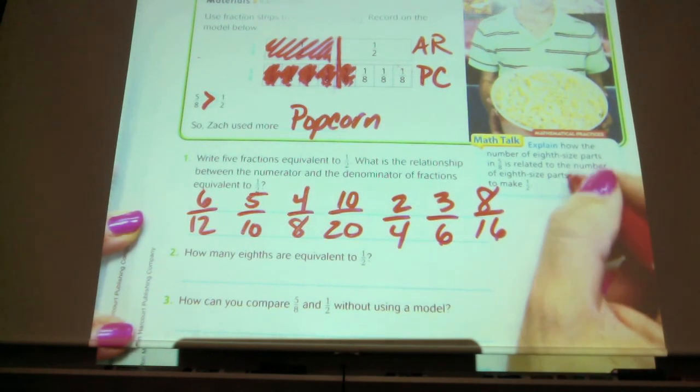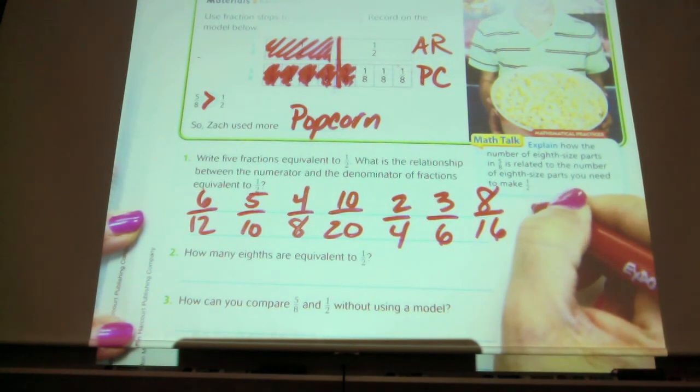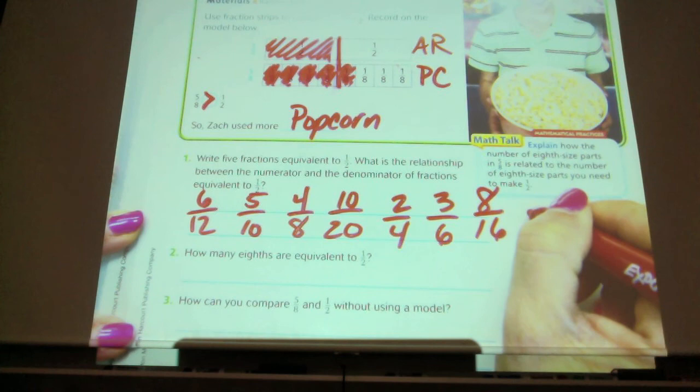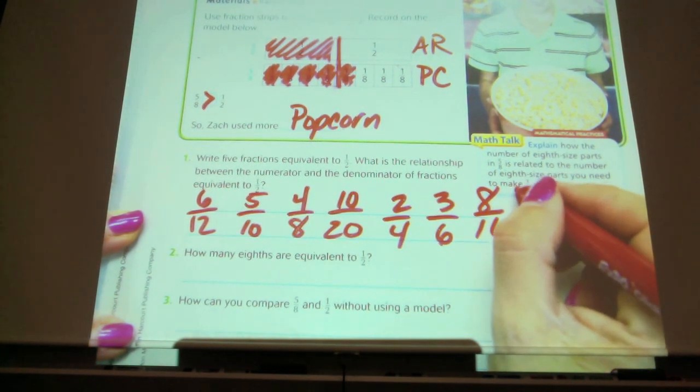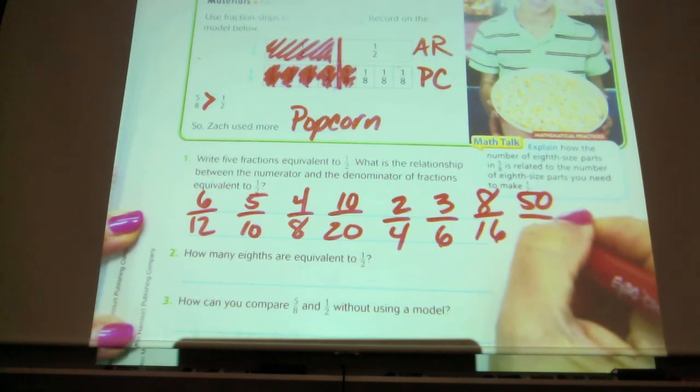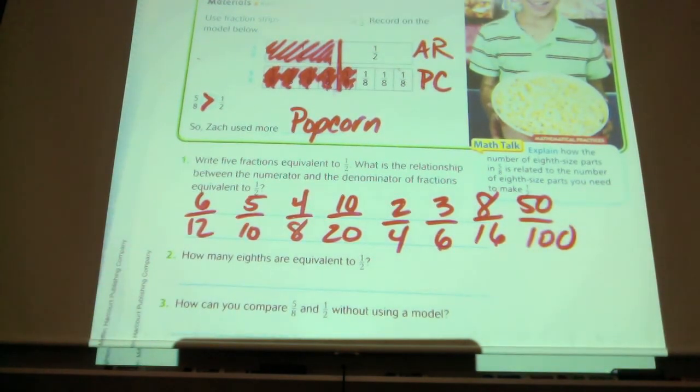Sophia, is that the one you were going to give? Daniel? That's what we just did. Jaden? Fifty-one-hundredths. That's a good idea. So do I have five? More. I definitely have more than five. But I was just trying to show that there's a lot out there. There's an infinite number of fractions that are equivalent to one-half.